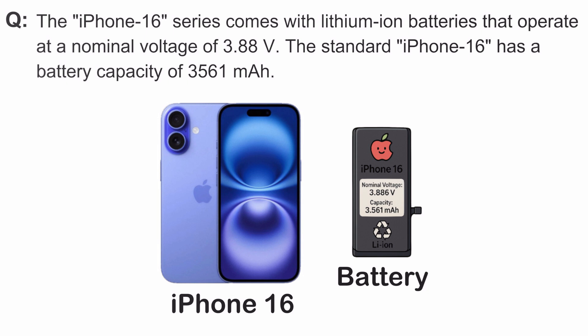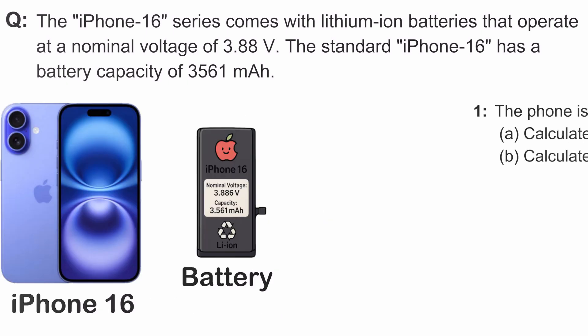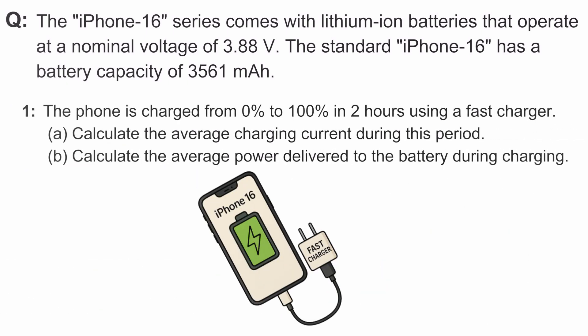The iPhone 16 comes with a 3,561 milliamp-hour lithium-ion battery and a nominal voltage of 3.88 volts. It charges from 0 to 100% in just 2 hours using a fast charger. Based on that, we'll first calculate the average charging current, then the average power delivered during charging.